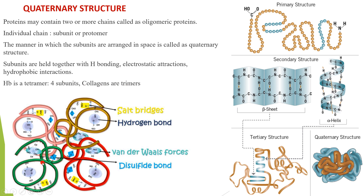To summarize: primary structure is simply the sequence of amino acids; when two primary chains join they give either alpha helical or beta-pleated secondary structure, stabilized by hydrogen bonding. When the secondary structure folds further, bonds increase due to side chain interactions, giving the tertiary structure. Finally, when two or more polypeptide chains coil together, you get the quaternary structure — the most complex structure of proteins.